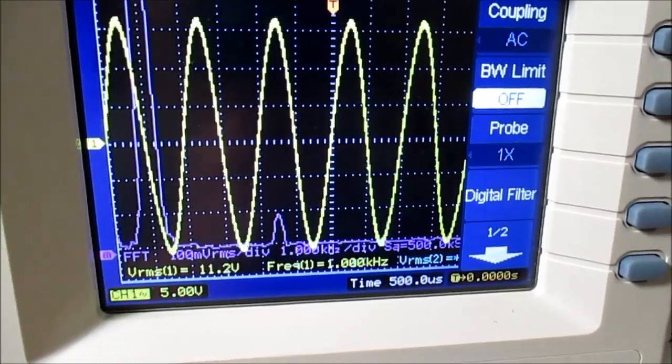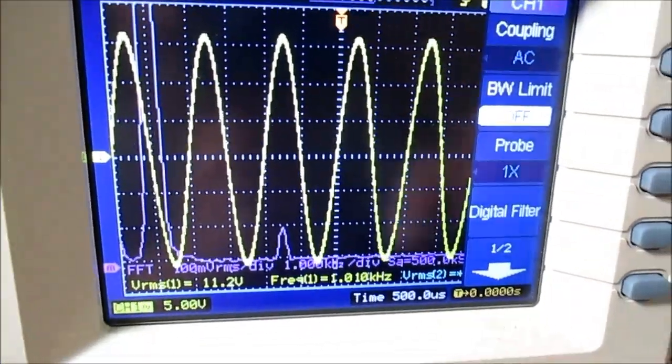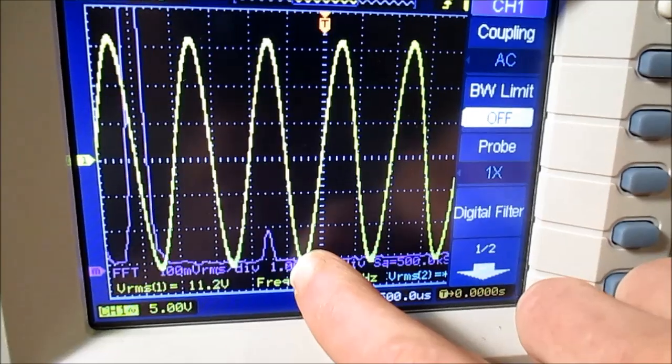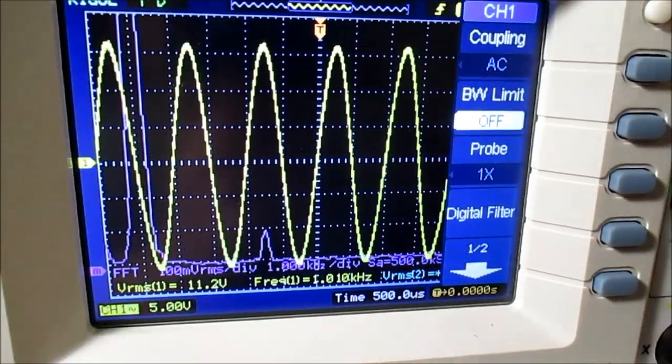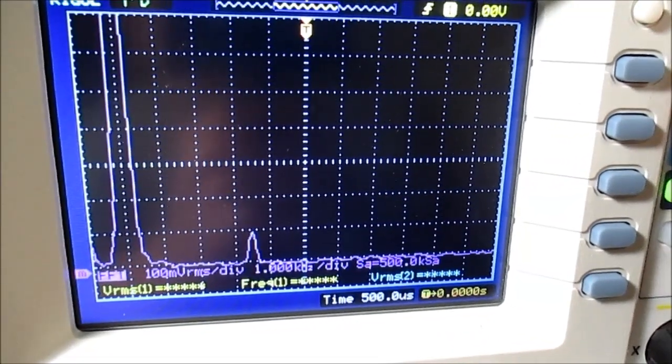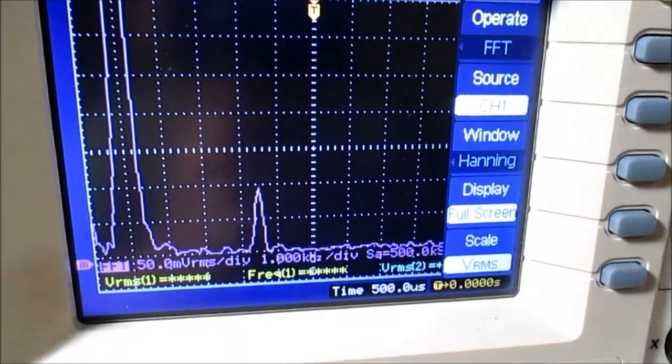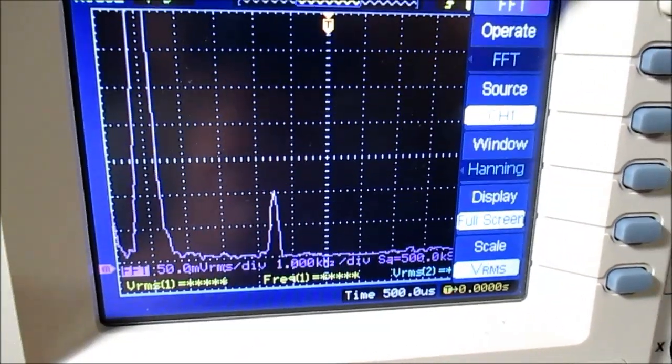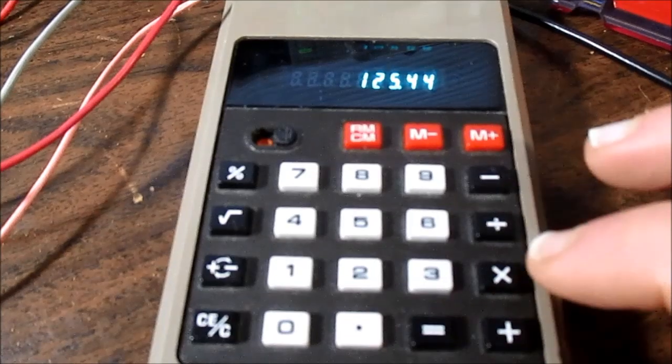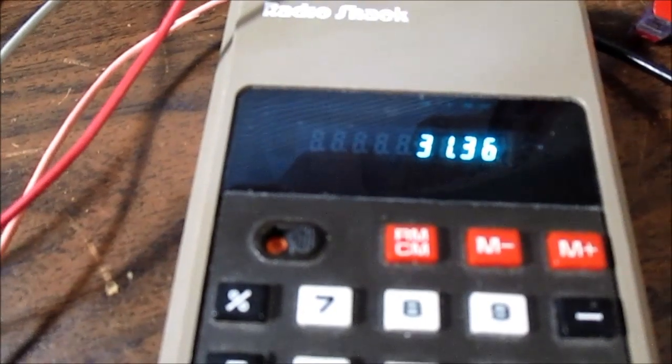We're getting 11.2 volts. And you can see that little node there is just my built-in one percent pilot signal. There is no other distortion. We had 11.2 volts RMS, square that, divide it by the load impedance of four ohms. 31.36 watts.